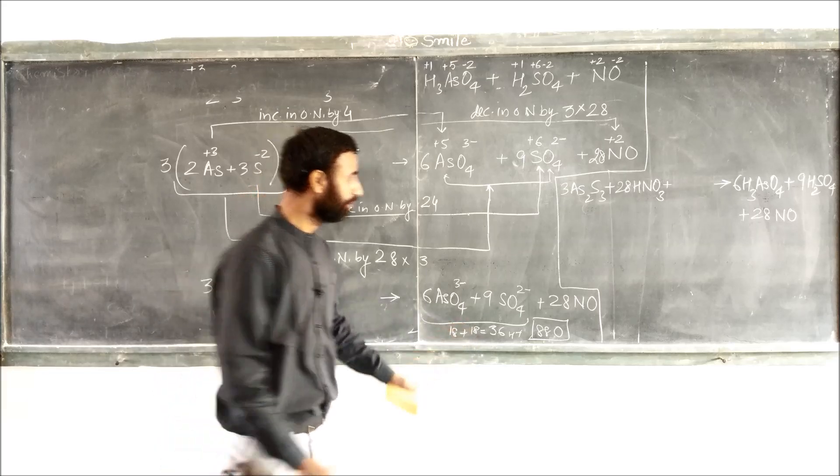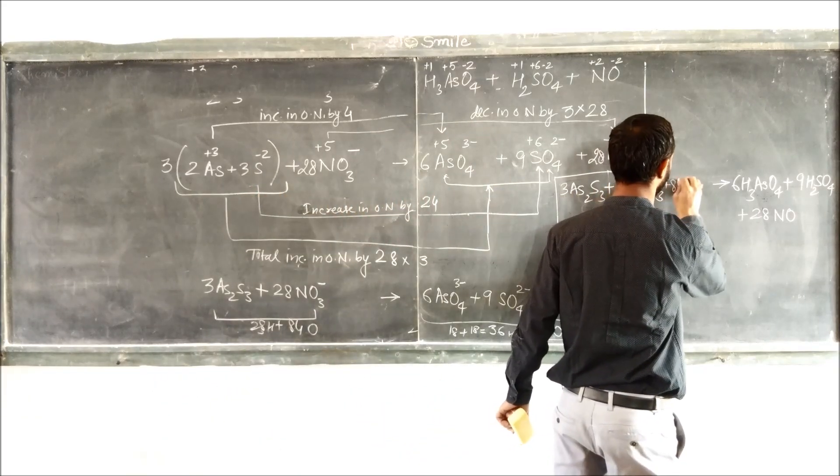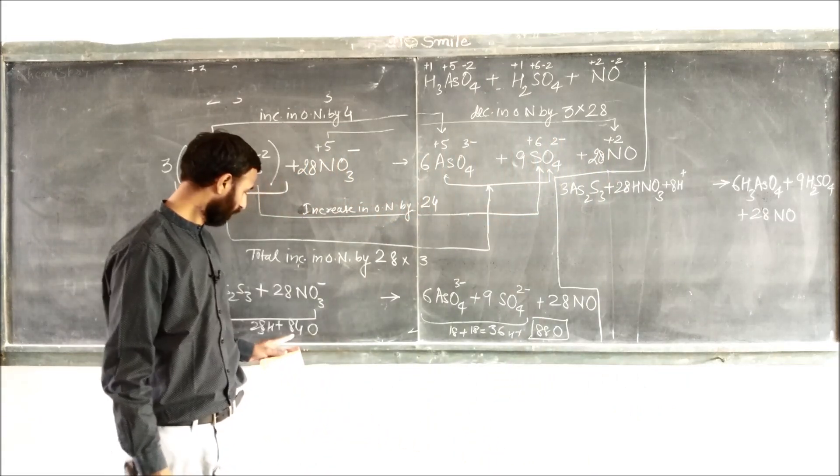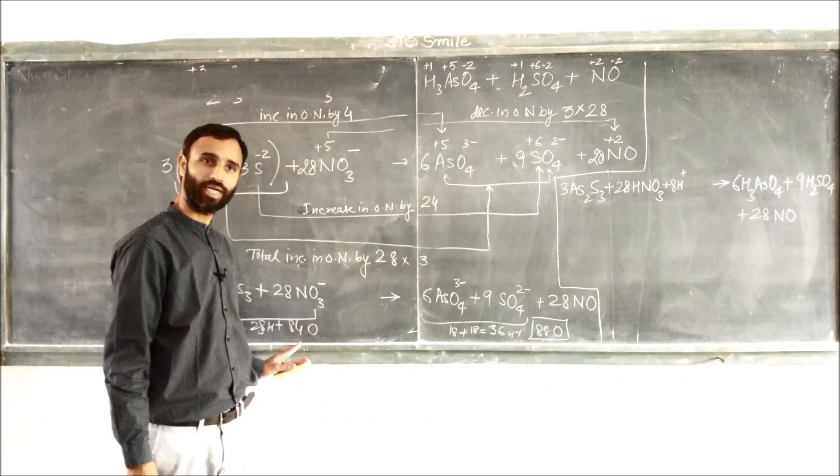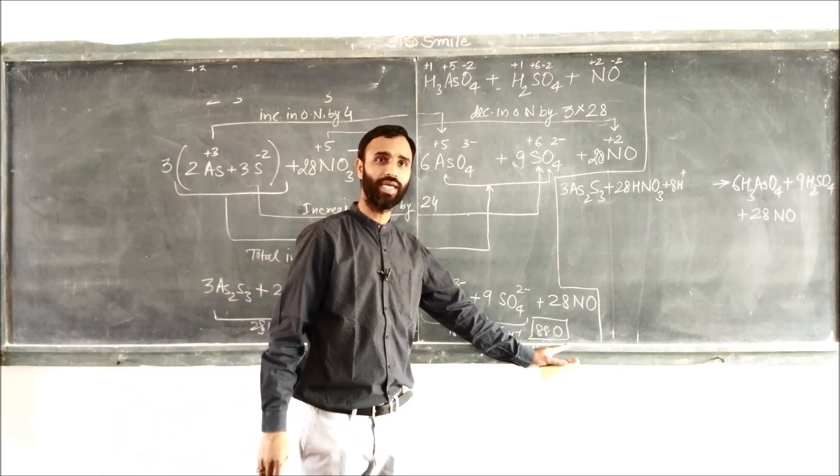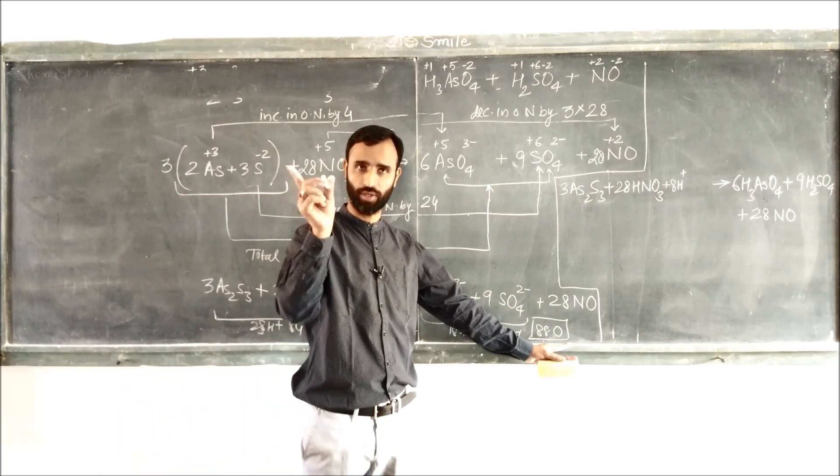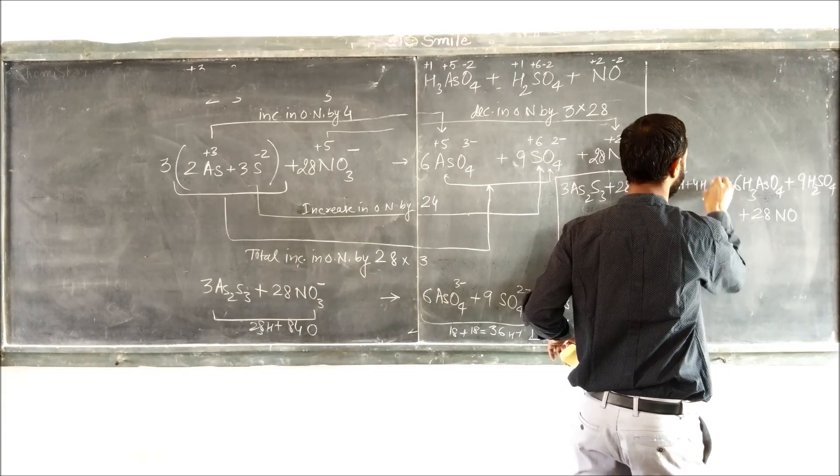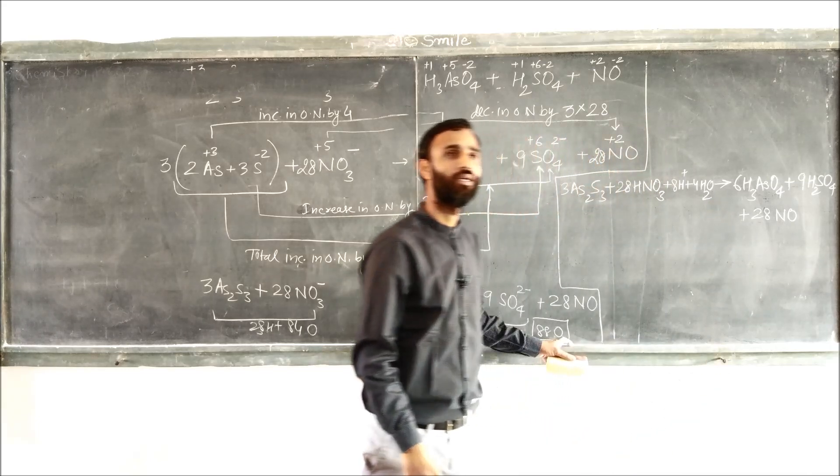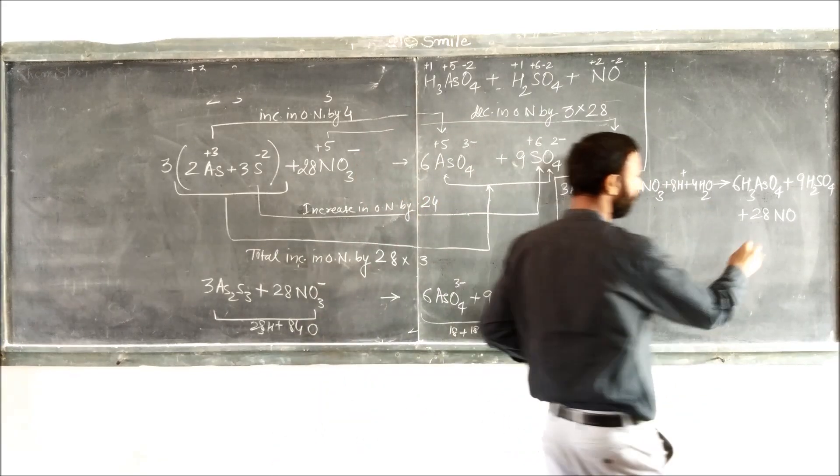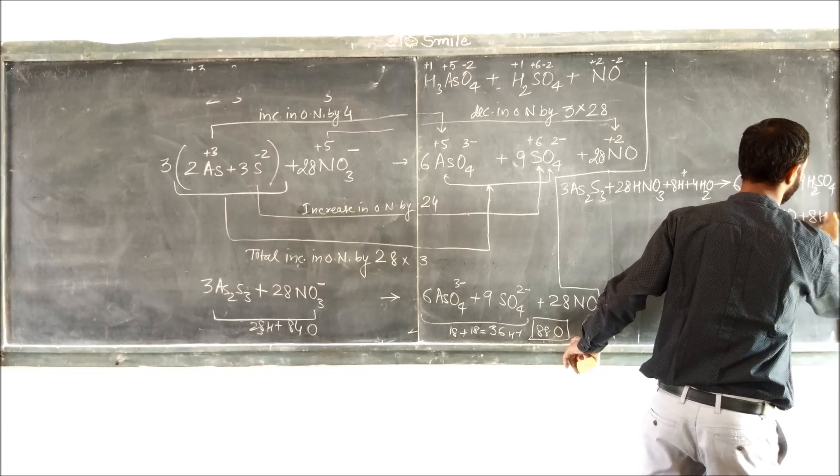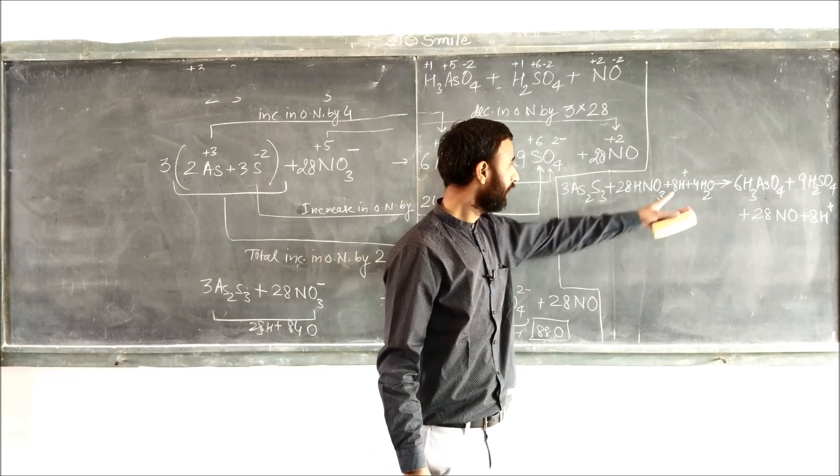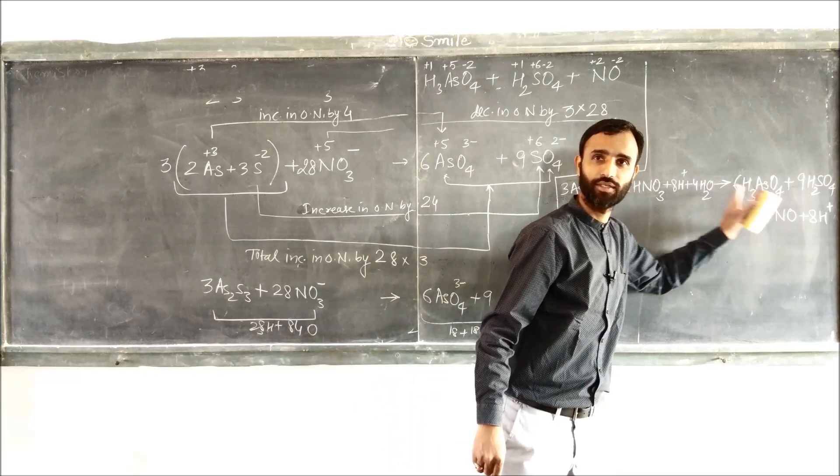To balance hydrogens, we have to add 8 H plus. Now oxygens, on this side 84, on the other side 88. That means there is a difference of 4 oxygens. So add 4 H2O to the side with deficit of oxygen and double the number of H plus. That means 8 H plus cancel out.